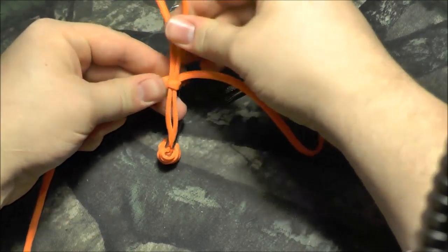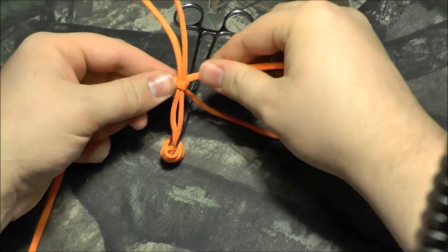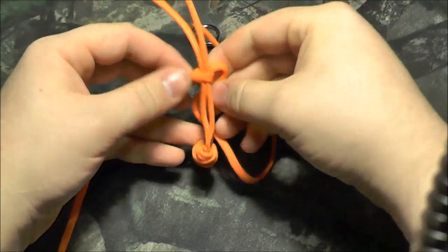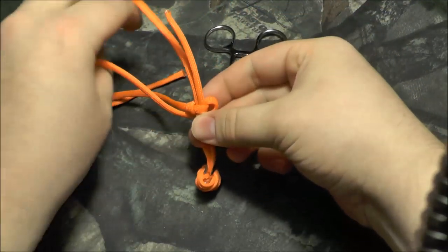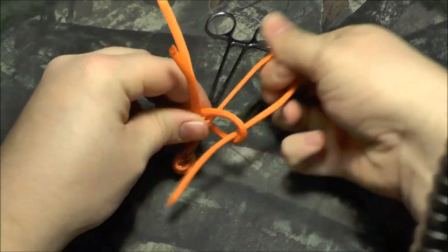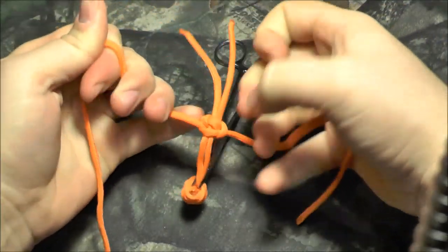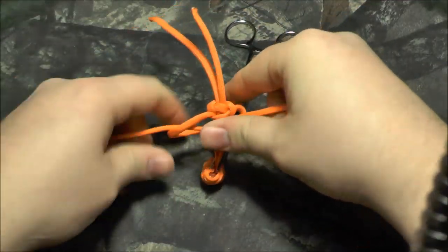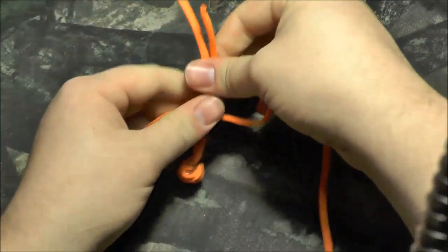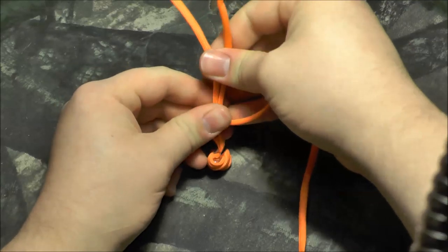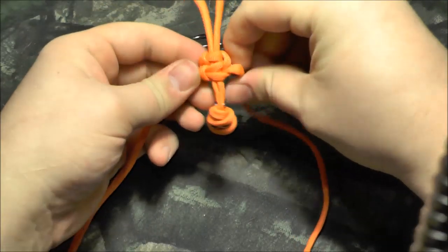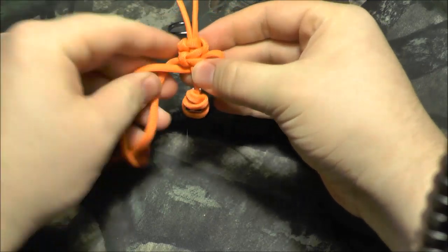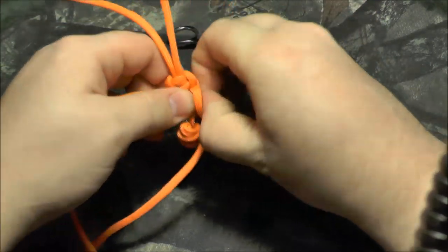Figure out where you want his body to begin, which is probably about right there. Make sure to keep those forceps on there, it'll help keep the head from unraveling. Then you'll just work the cobra back up. We'll go ahead and make his body real small so we can get this video over, but you just keep doing the cobra.